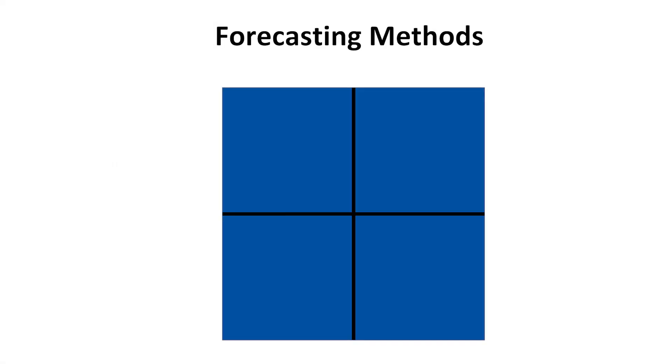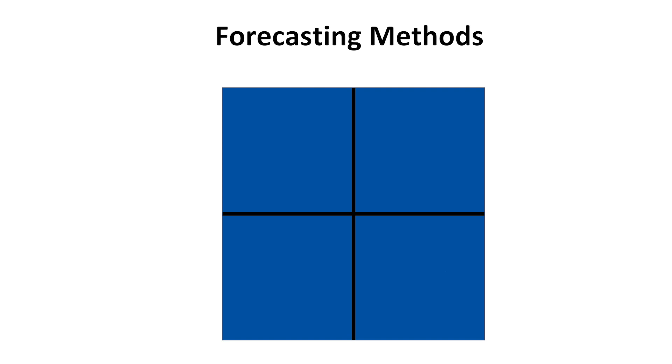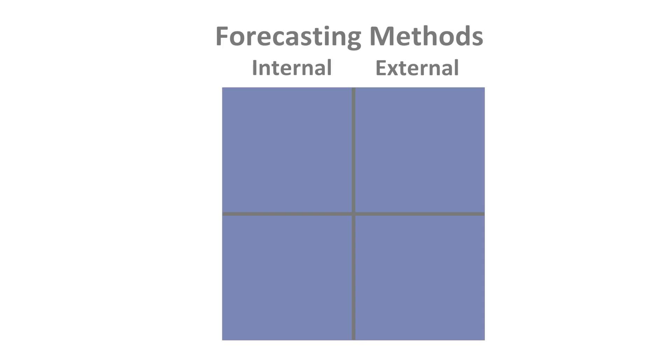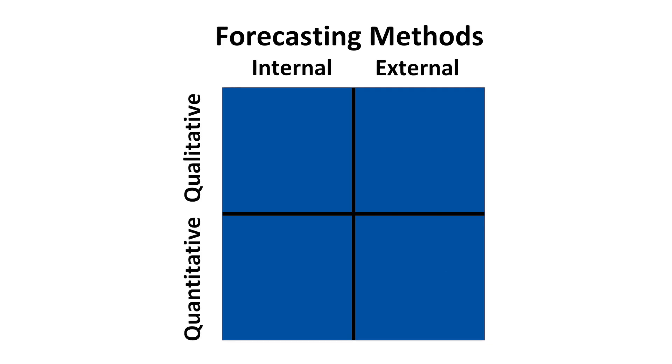There are many methods of forecasting, nicely shown with a good old 2x2 matrix. On one side, we have internal and external methods, meaning to draw information from both within our own organisation and from outside it. On the other side of the matrix, we have quantitative and qualitative methods.